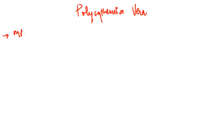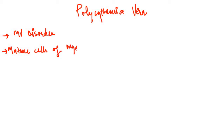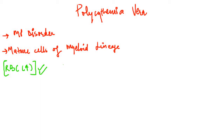Polycythemia vera is a type of myeloproliferative disorder, which means there will occur neoplastic proliferation of the mature cells of the myeloid lineage. The mature cells of the myeloid lineage include granulocytes, platelets, and RBCs. In polycythemia vera, the RBCs are characteristically increased to a proportion greater than the other cells, although granulocytes and platelets are also increased.